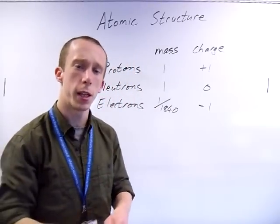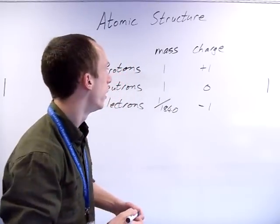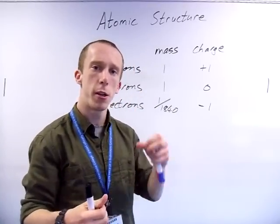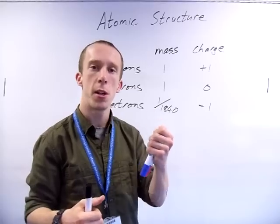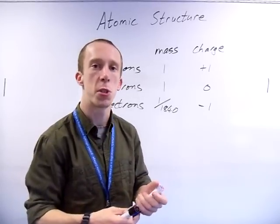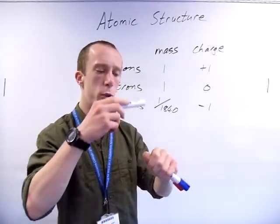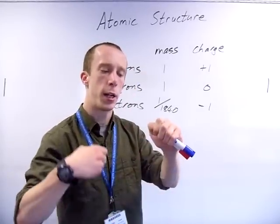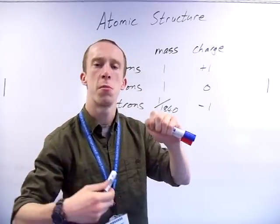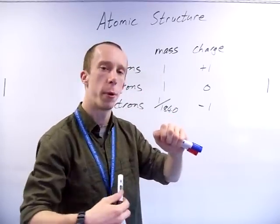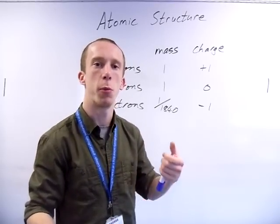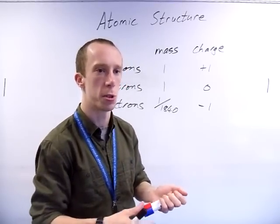A little table like that is more or less all you need to remember. The protons and neutrons are in the nucleus, so they're in the centre of the atom, whereas the electrons are round the outside in the orbitals. They don't go around in a nice spherical solar system style orbit - they're moving around all crazy. We'll come into the actual orbitals in a second.